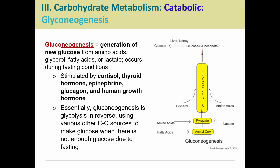Things like cortisol, thyroid hormones, epinephrine, human growth hormone, and glucagon can all stimulate gluconeogenesis. Basically it's glycolysis but backwards. Fatty acids can become acetyl-CoA and enter this process; amino acids can become pyruvate and enter this process. But we go through glycolysis backwards to get to glucose. This only happens because we don't have enough glucose — for whatever reason, we're fasting or don't have access to food at that moment.